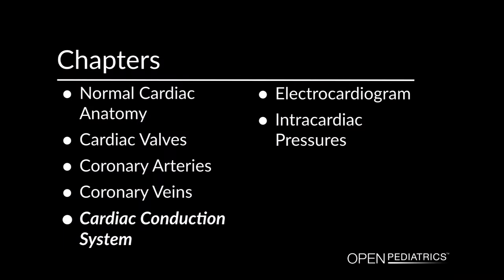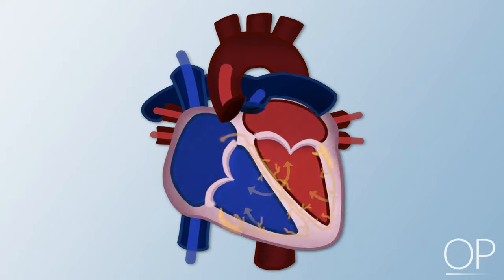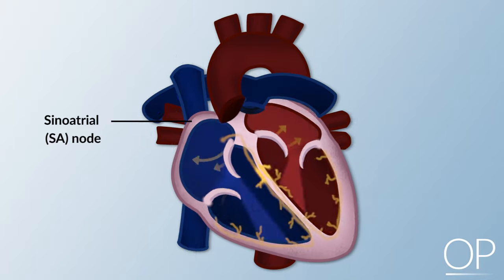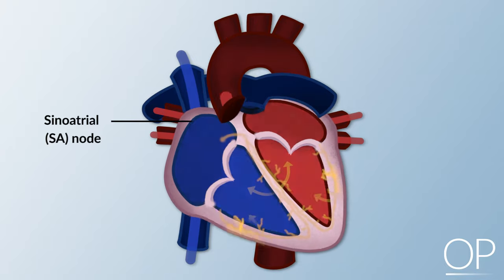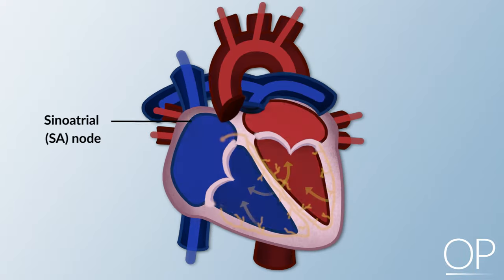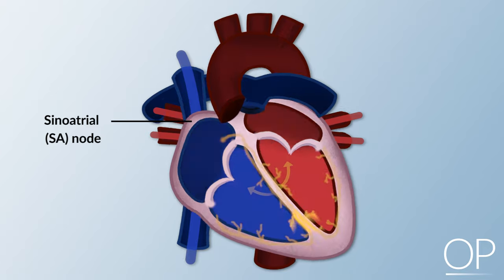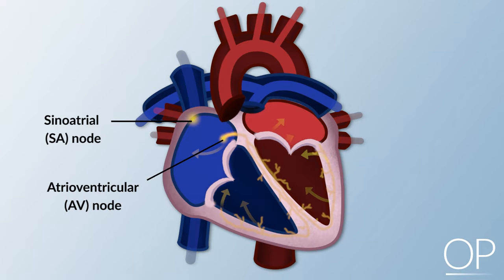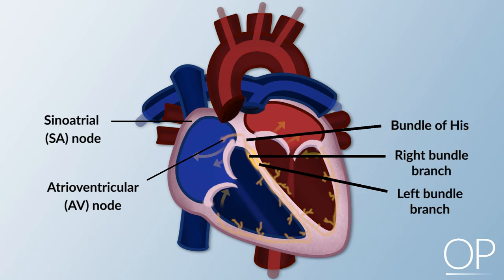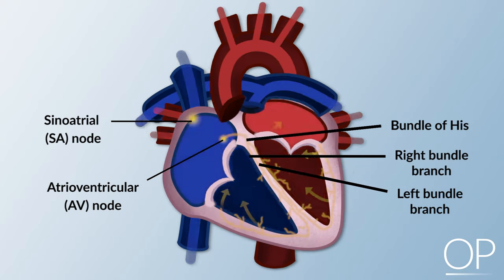Cardiac Conduction System. Electrical impulses originate in the sinoatrial node, located at the junction of the right atrium and superior vena cava. Each electrical impulse generated from the SA node travels through the right and left atrium, causing the atria to contract. The impulse then travels to the atrioventricular node, AV node, then to the bundle of His, and finally through the right and left bundle branches of the ventricles, causing the ventricles to contract.